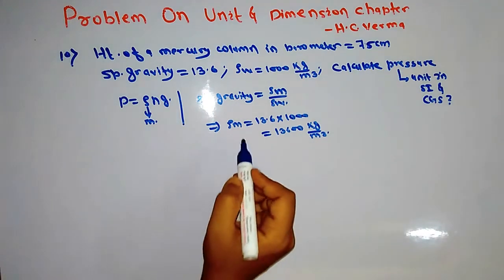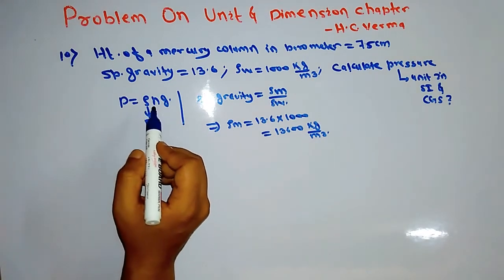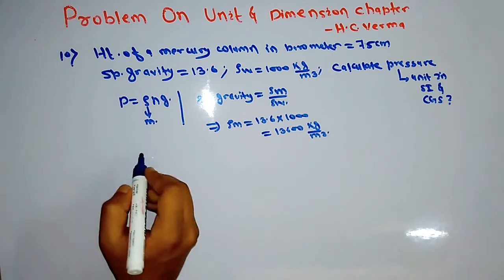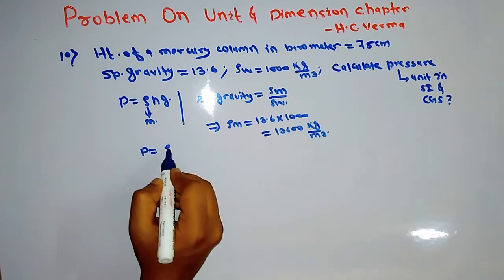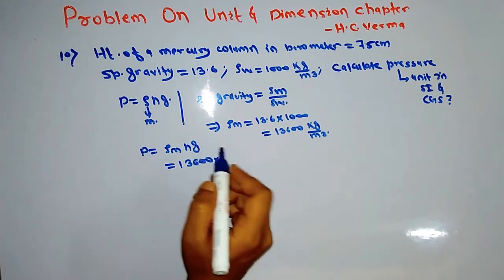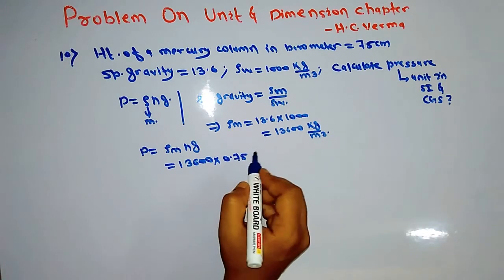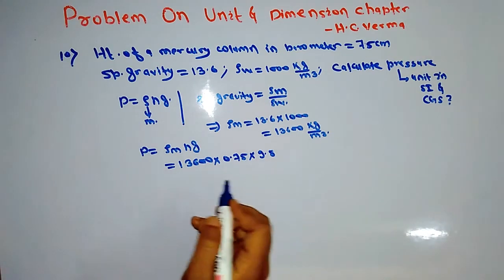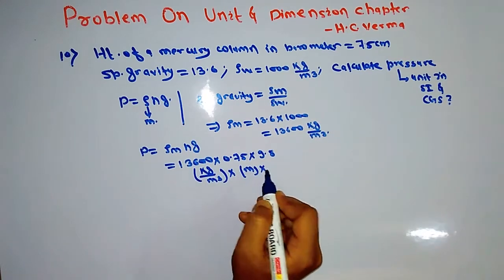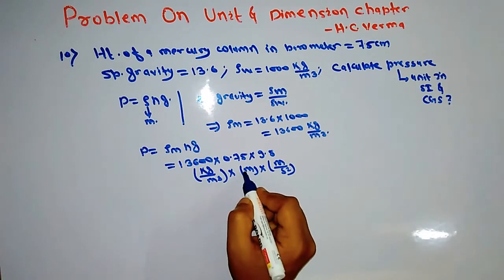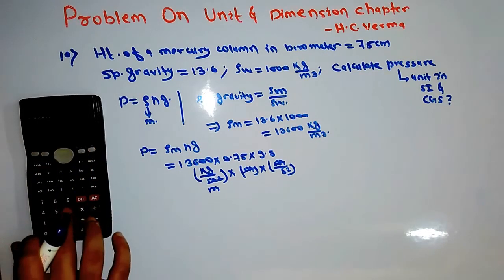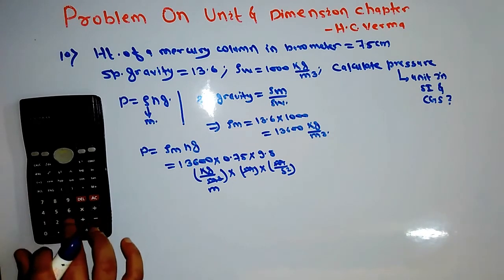Now we know the density of mercury. From the question, the height of the mercury column in the barometer is 75 cm, which is 0.75 meters. G, the acceleration due to gravity, is taken as 9.8 m/s². So P equals rho times H times g equals 13600 into 0.75 into 9.8. The units are kg per meter cube, meter, and meter per second square — the meters cancel.